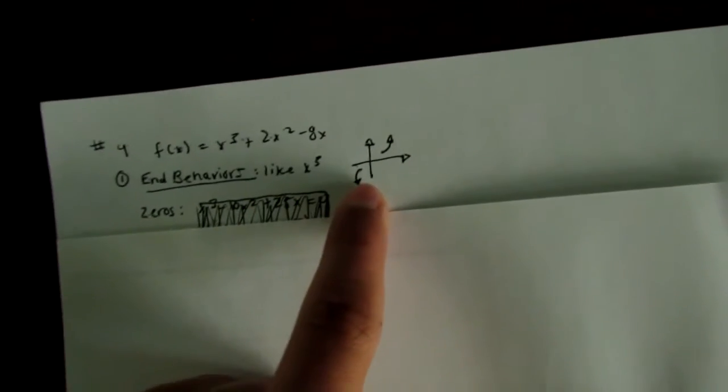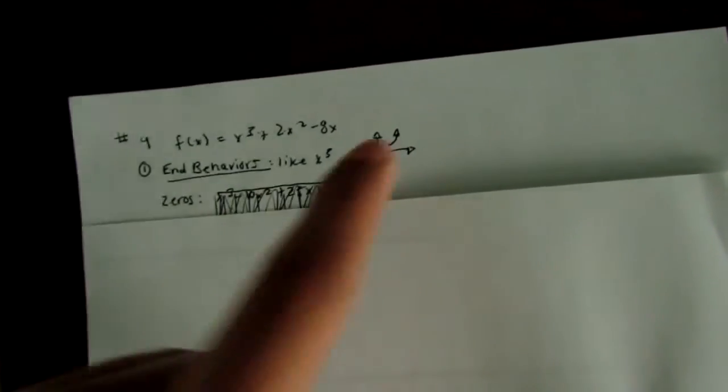We will first see what the end behaviors look like. The end behaviors look like x³. If you don't know what that is, sketch a small graph, and that is the parent function for x³.